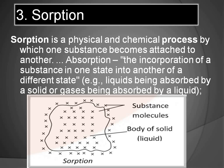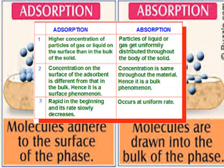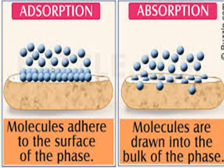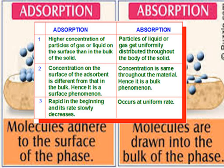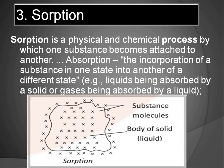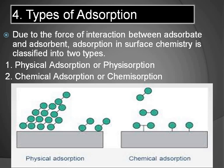A great example for both processes: if you have a sponge and put it in water, the water absorbs into the sponge — that is absorption. But if you place that wet sponge on sand, the sand remains on its surface and does not get inside — that is adsorption. So a wet sponge in water is the best example of absorption, and a wet sponge on sand is the best example of adsorption.